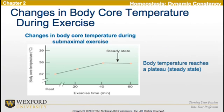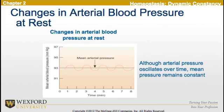Now, looking at this graph, this is going to look at changes in body core temperature during exercise. What we can see is changes in the body core temperature during submaximal exercise show that at some point the body temperature reaches a plateau, or again a steady state. On the y-axis we are going to be seeing the body core temperature, which is dependent upon the exercise time. Another graph reflecting changes in arterial blood pressure at rest shows that although the arterial blood pressure oscillates over time, the mean pressure remains constant.